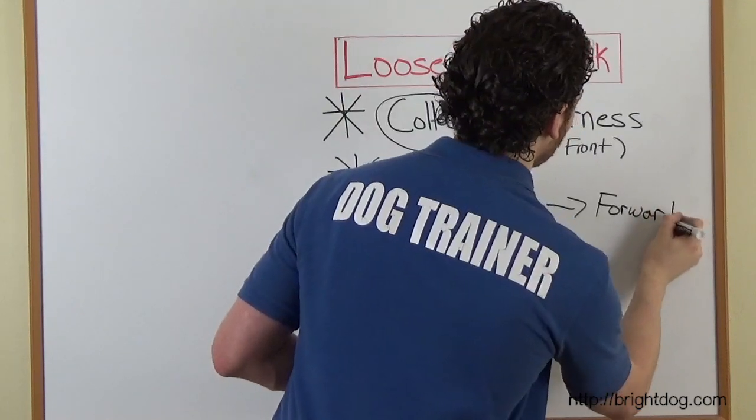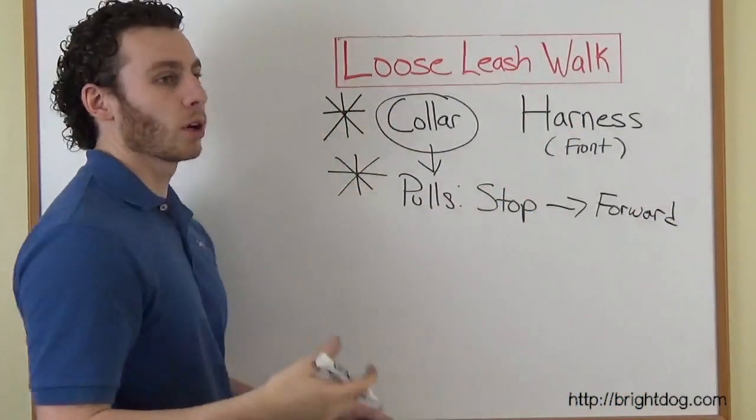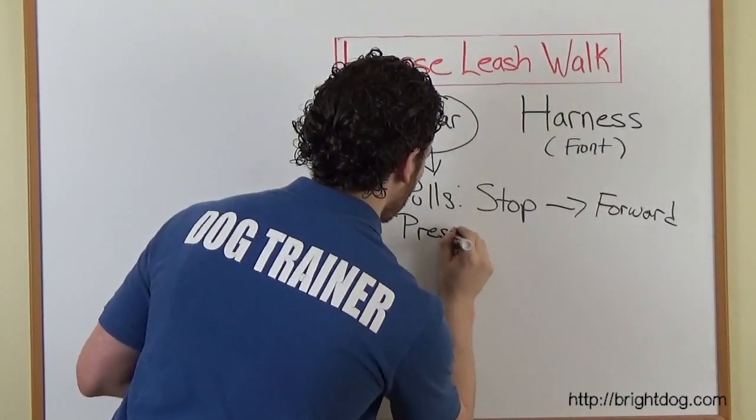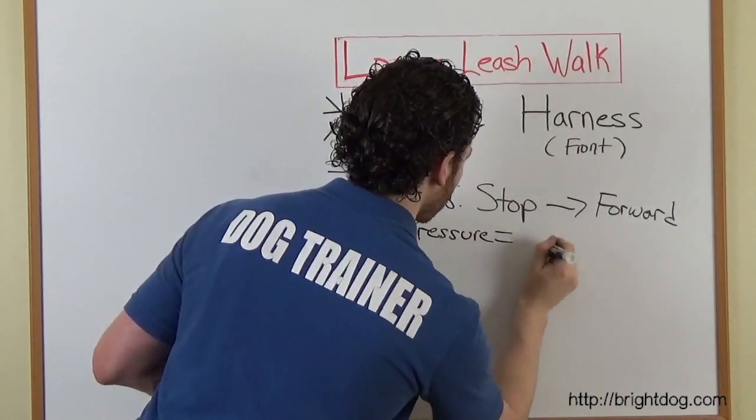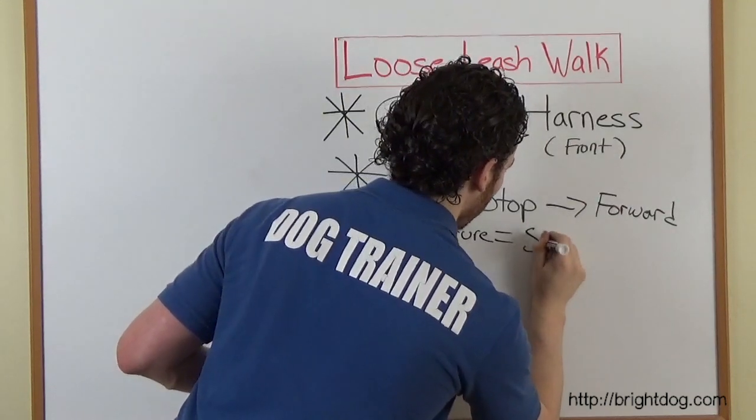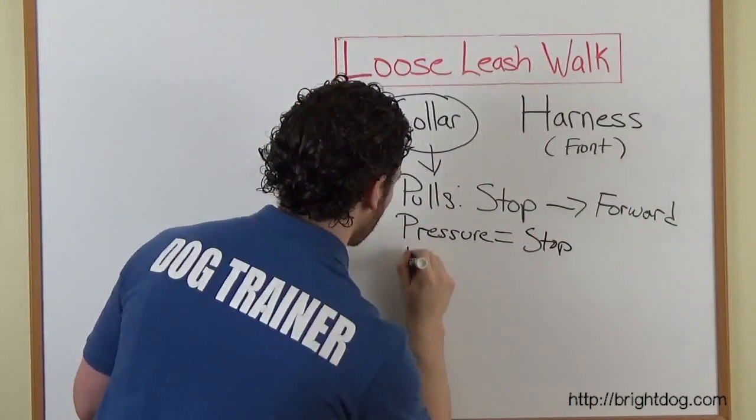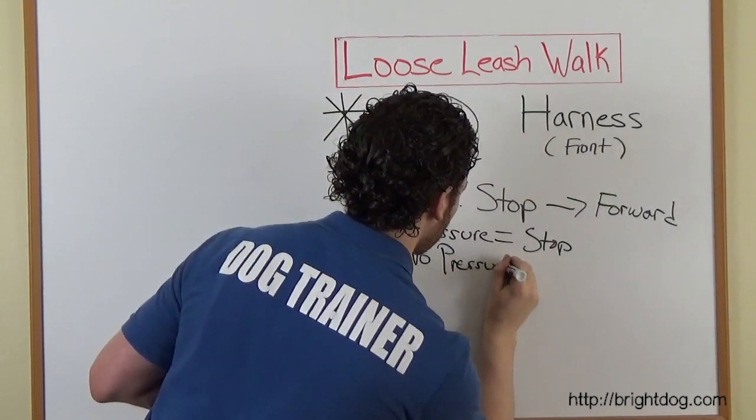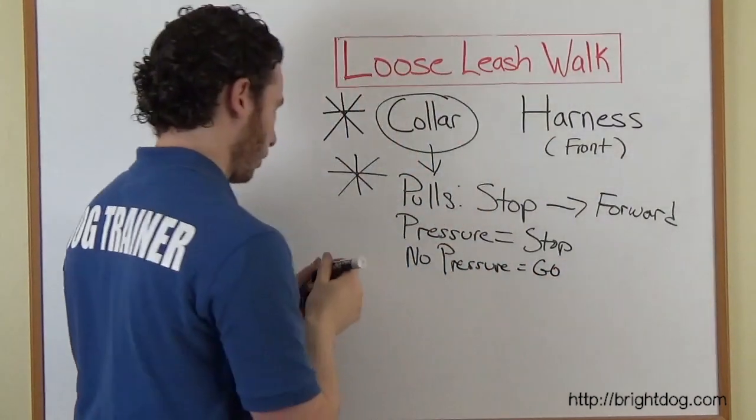So you're going to be kind of doing this crazy stop, go, stop, go. But what we're going to teach the dog is that pressure on his neck equals stopping and no pressure means can go forward. Let's go, stop and go.